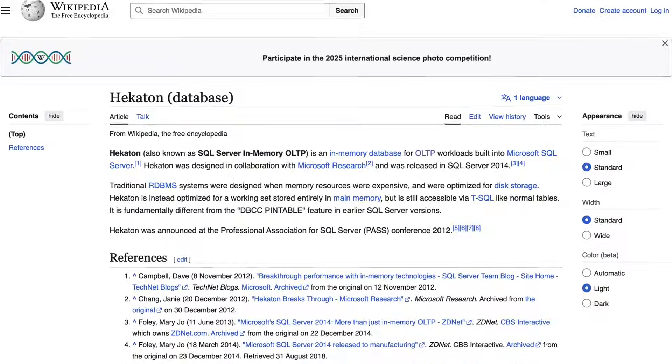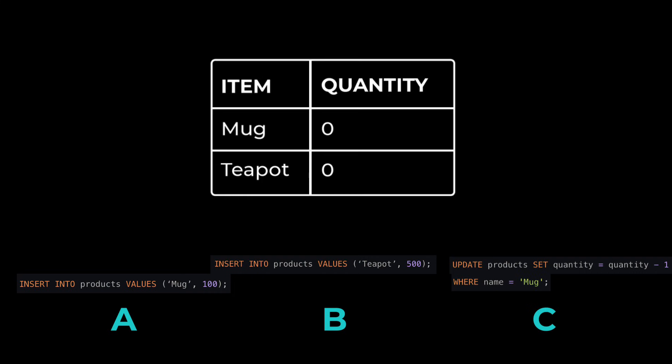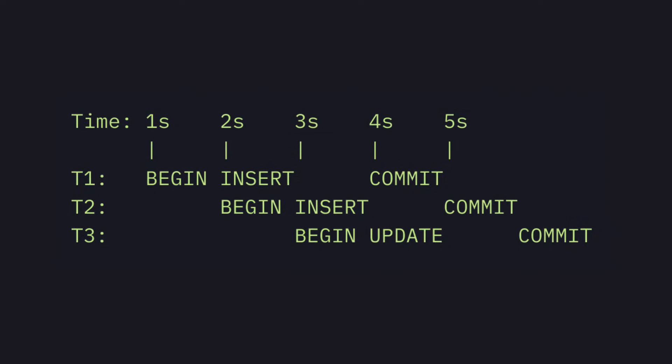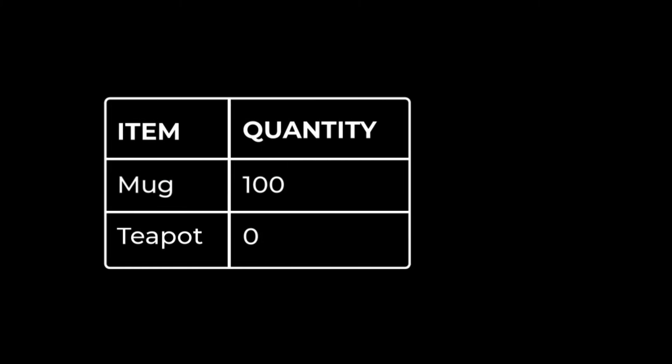Turso's Rust database gets around this by tracking row versions in memory, a feature inspired by Hekaton from Microsoft SQL Server. Imagine three people make multiple updates to this data. Assuming the database commits are sequential, the first transaction succeeds without being blocked, and the row gets a version with a begin and end value.